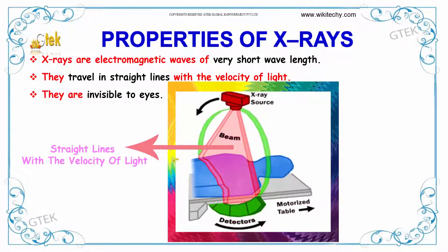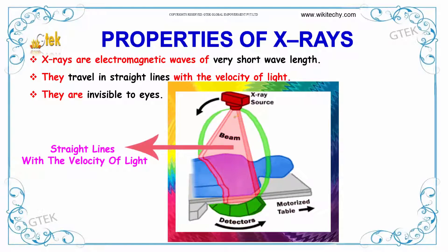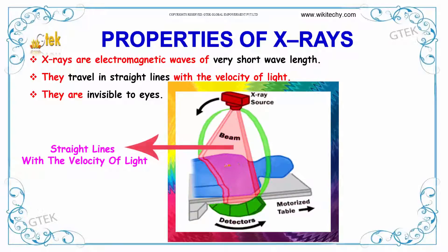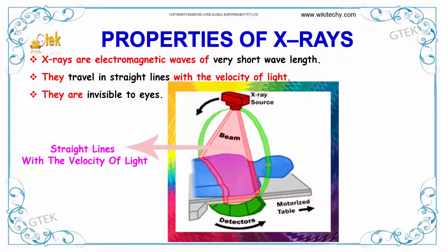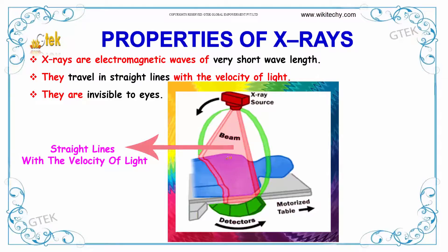If we talk about the properties of X-rays: X-rays are electromagnetic waves of very short wavelength. They travel in a straight line with the velocity of light and they are invisible. The X-ray beam is passed through the human body, which is detected by the detector.